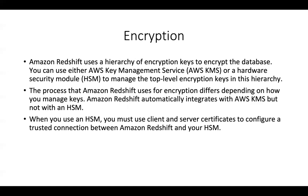For encryption of data at rest, there are two types of strategies. You can leverage KMS encryption - out-of-the-box functionality - using an existing KMS key or creating a new one for Amazon Redshift. Amazon Redshift also integrates with Cloud HSM, a hardware security module where you store your keys with tamper-proof capabilities. However, it doesn't natively integrate automatically with Redshift - you have to provide your own client and server certificates to configure a trusted connection between Redshift and your Cloud HSM.